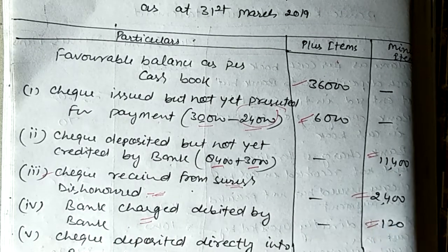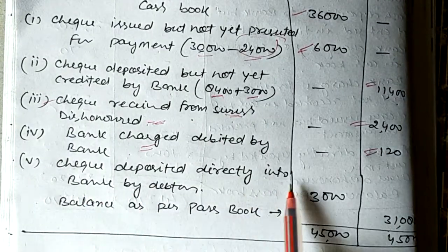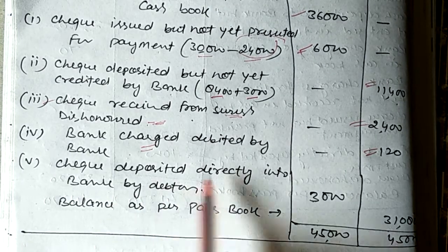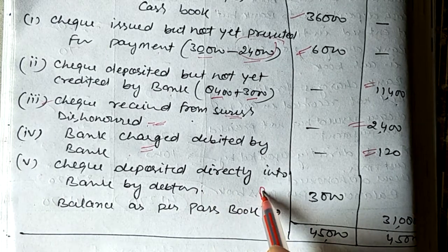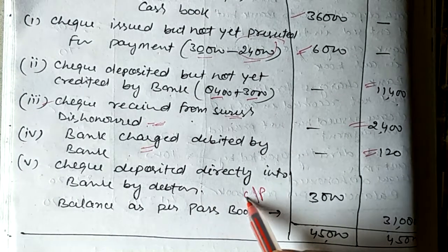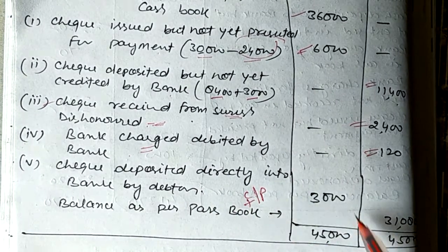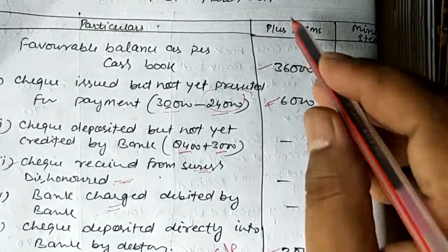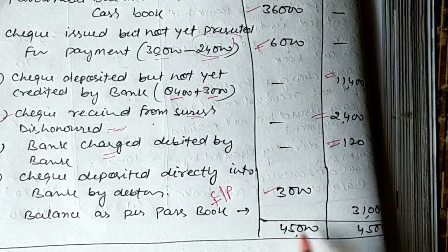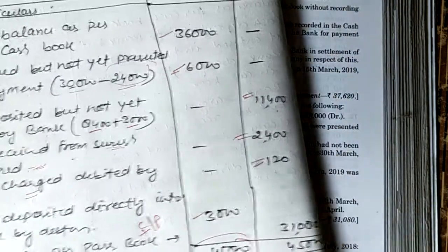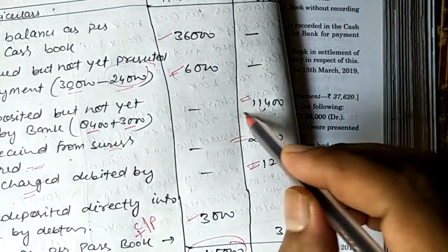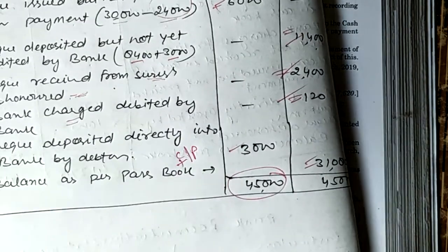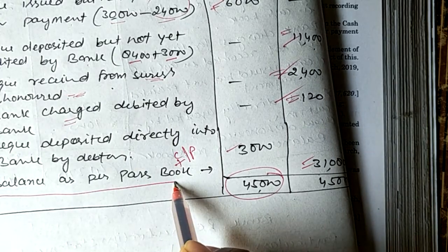The direct deposit of 3,000 rupees will be plus here. The total comes to 45,000 rupees. From 45,000 rupees, this amount minus the difference amount gives 31,080 rupees, which is the favorable balance as per passbook.